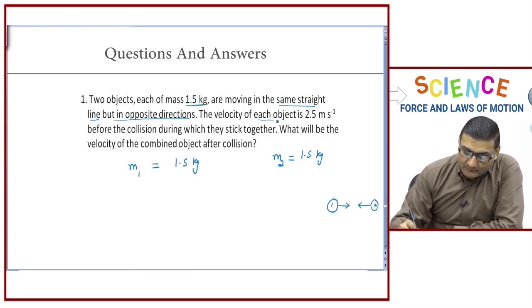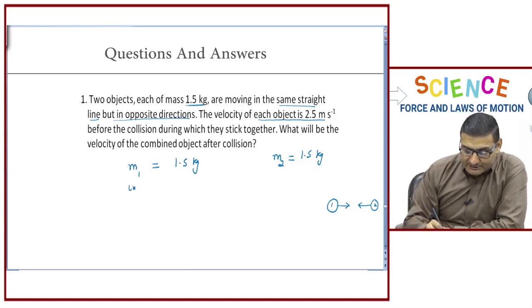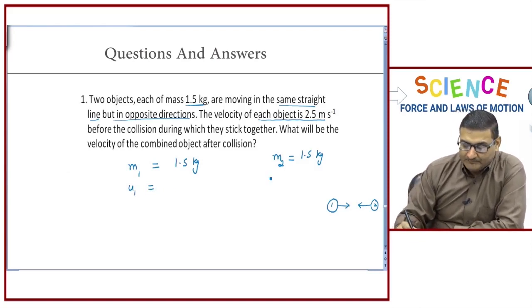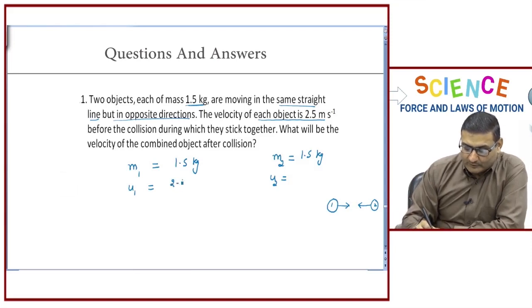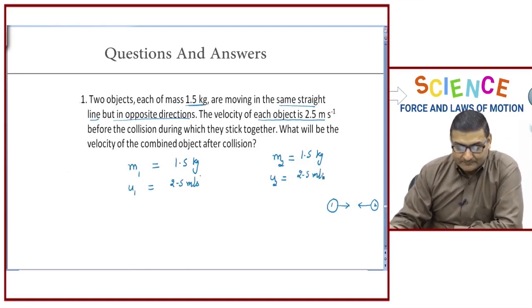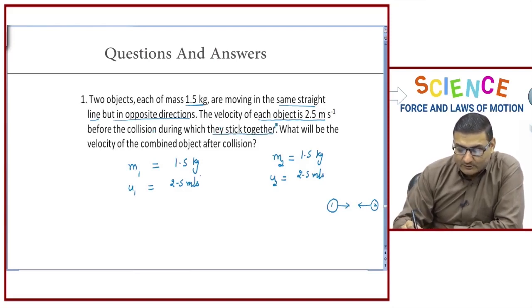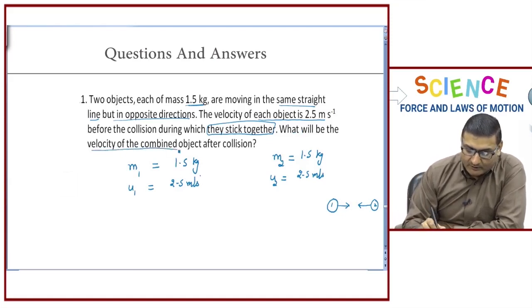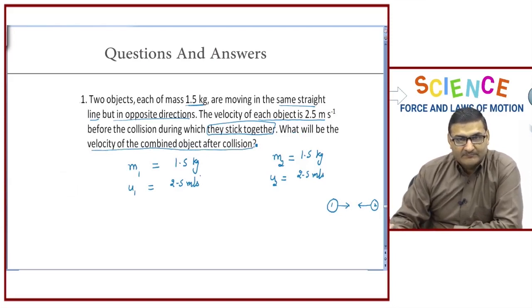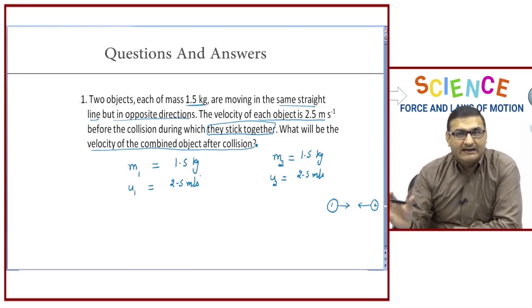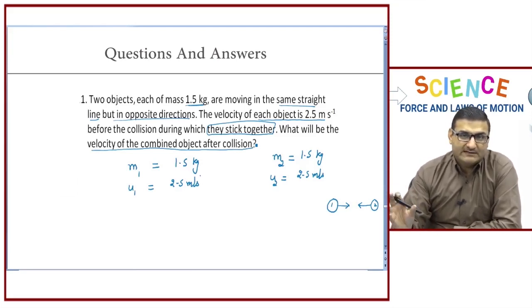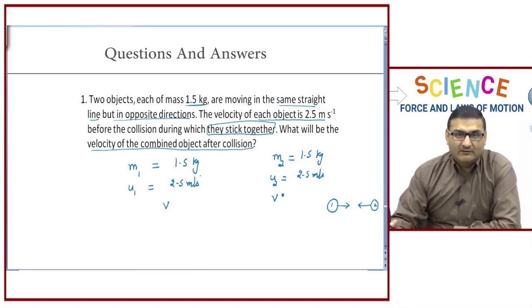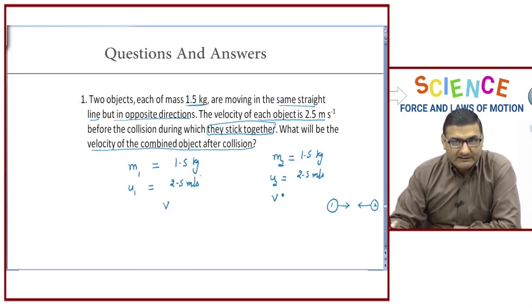The velocity of each object is 2.5 meter per second. Let the initial velocity of the first object be u1 and of the second object be u2. Both objects are moving with an initial velocity of 2.5 meter per second right before the collision, during which they stick together. We need to find the velocity of the combined object after collision, which we represent with small v.